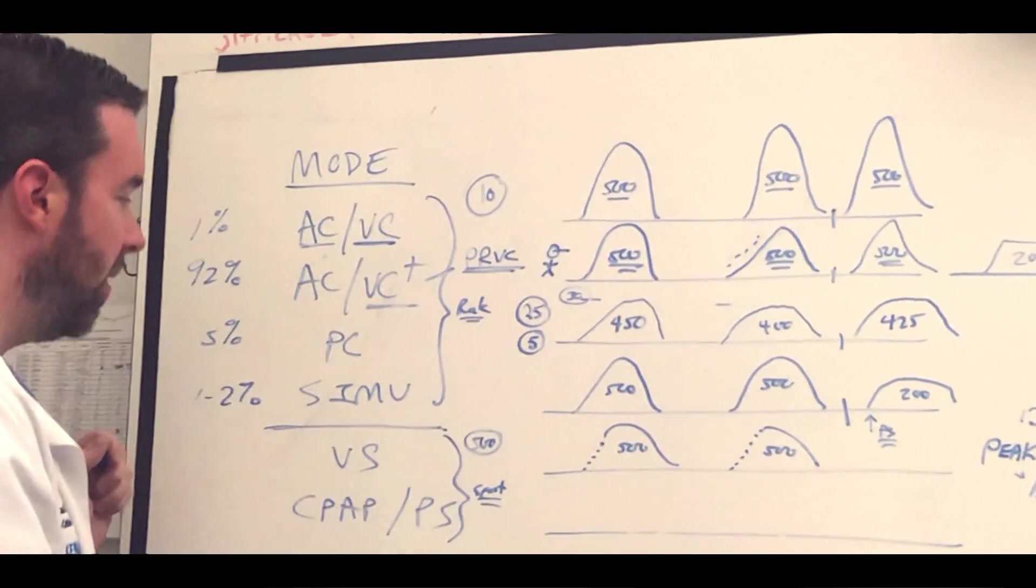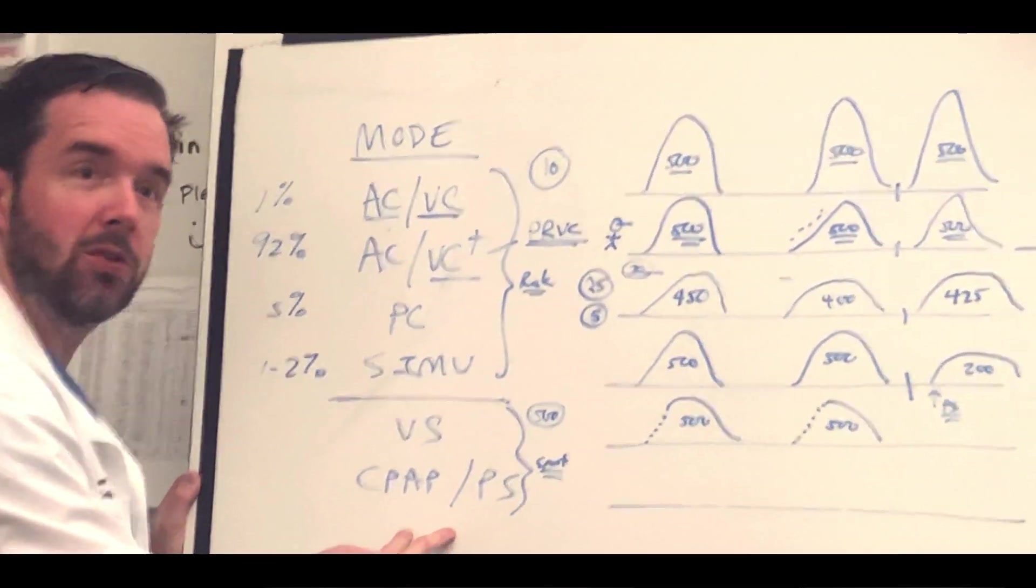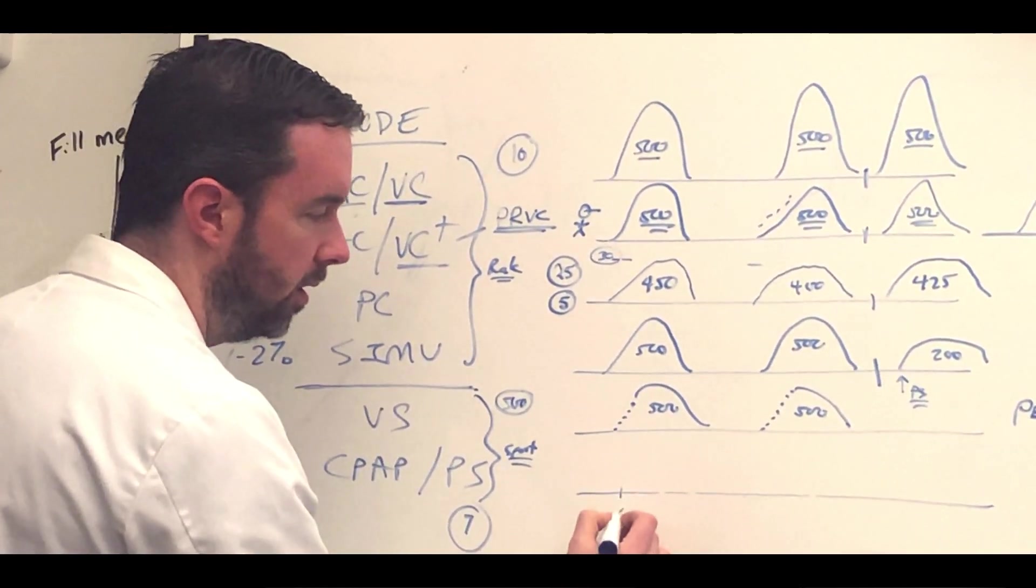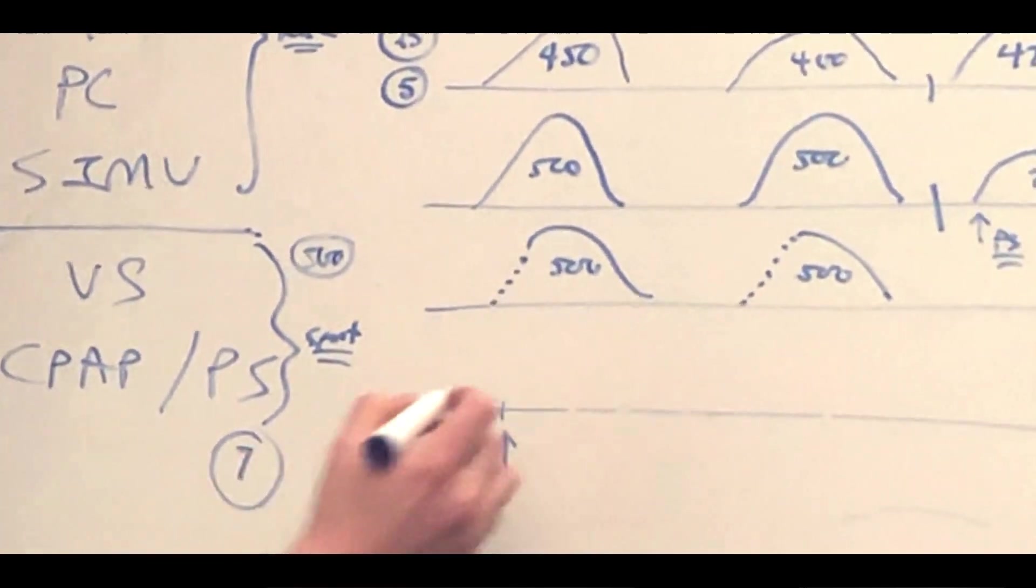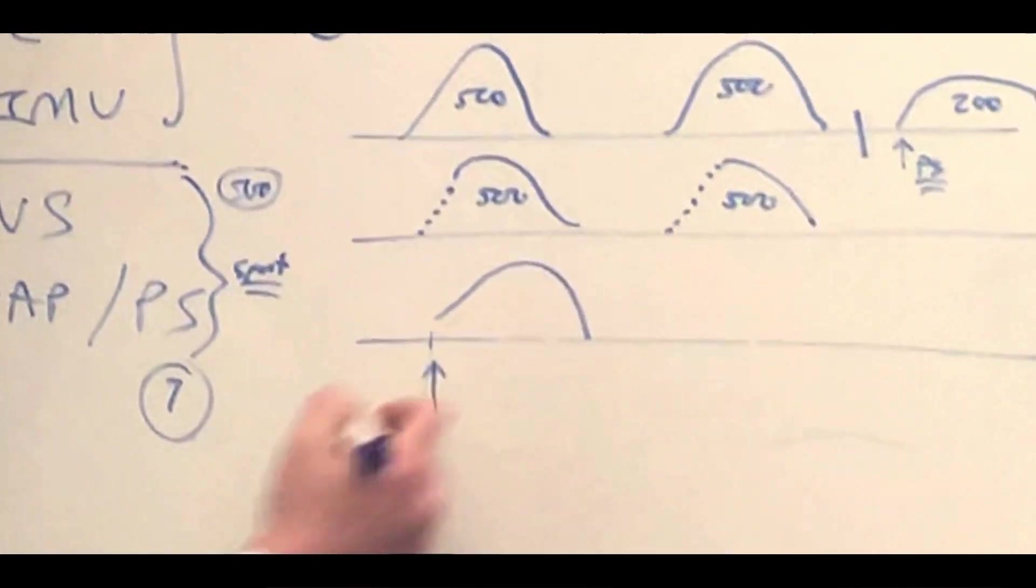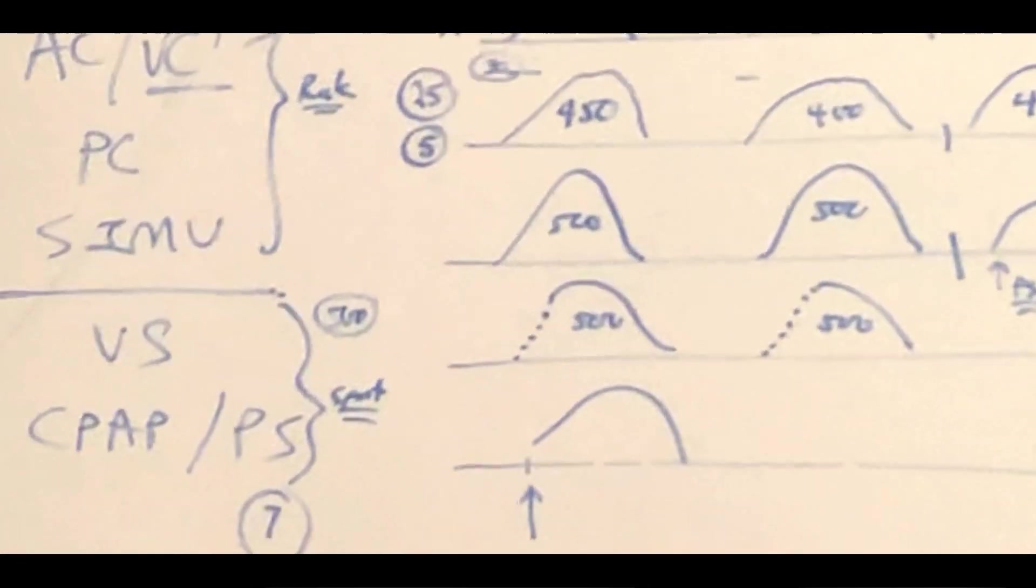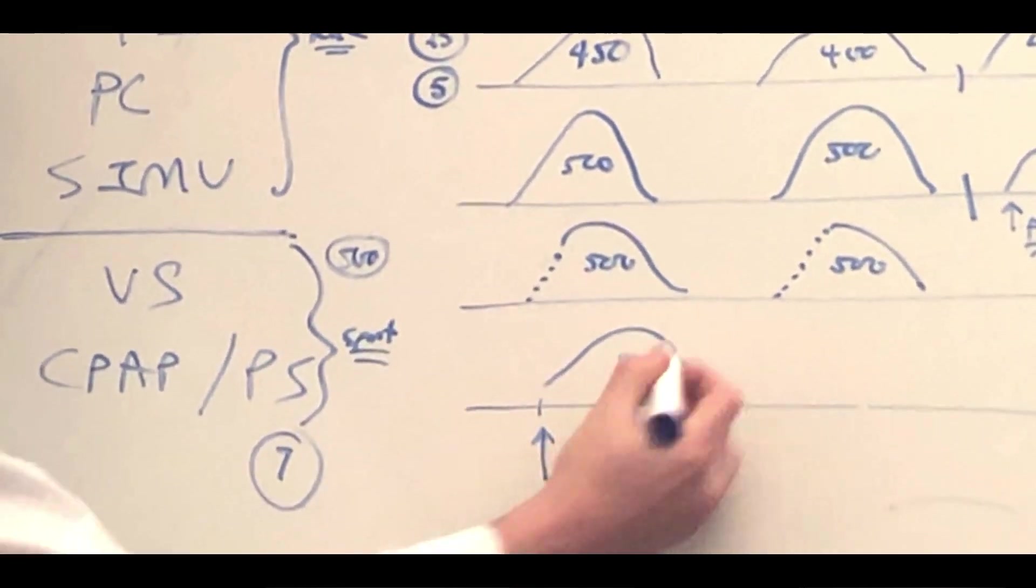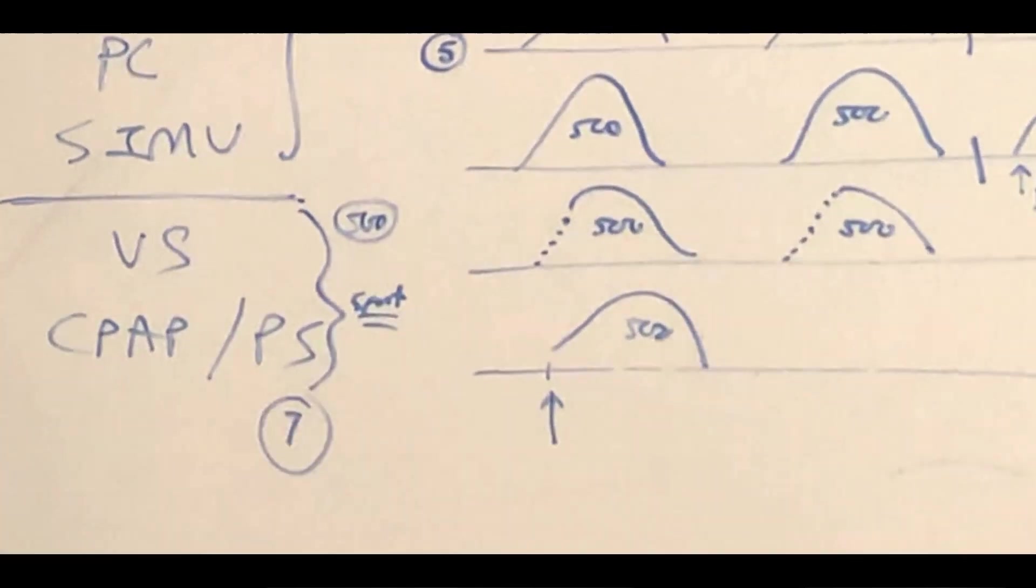So if I were to move them over to the next mode, which is CPAP pressure support, let's say for the example I gave them 7 of pressure support. That's at the beginning of their breath. I would expect their tidal volume to be what? 500, because we just kind of showed you that 7 is what it was taking to get the job done.